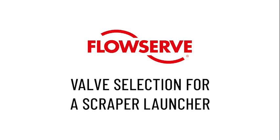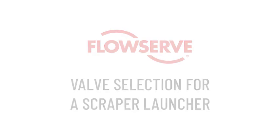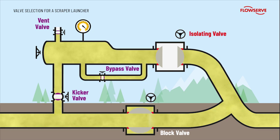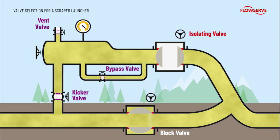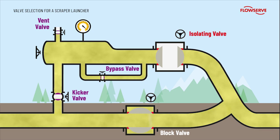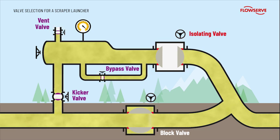Valve selection for a scraper launcher. In order to clean a pipeline, a scraper is passed through the pipe to remove any scale or debris. The scraper is launched into the pipe using gas pressure via a launcher and removed via a receiver. Launchers and receivers are similar in design and operating sequence, and both use a series of valves to control the gas flow. In this video, we will show a typical launcher sequence to understand what the roles and critical requirements of each valve are, so an optimal valve selection can be made.